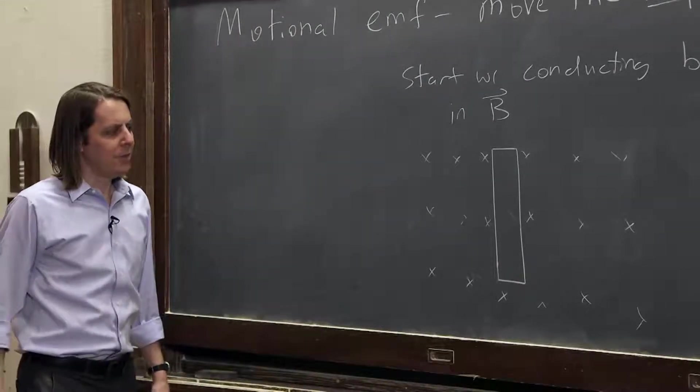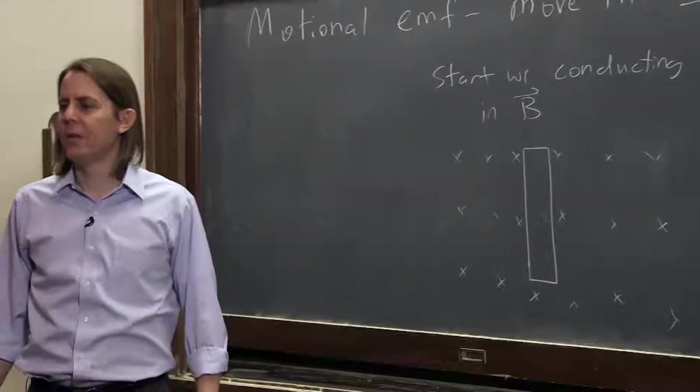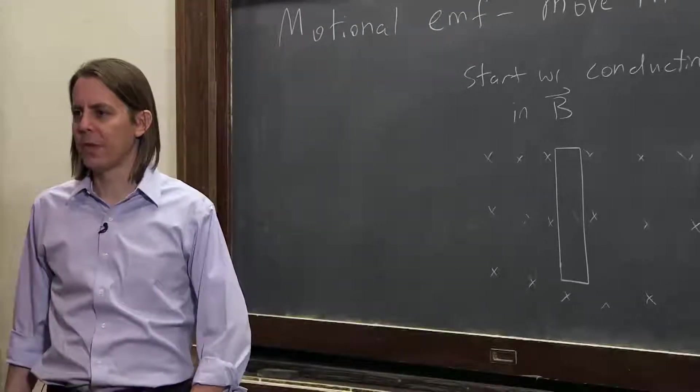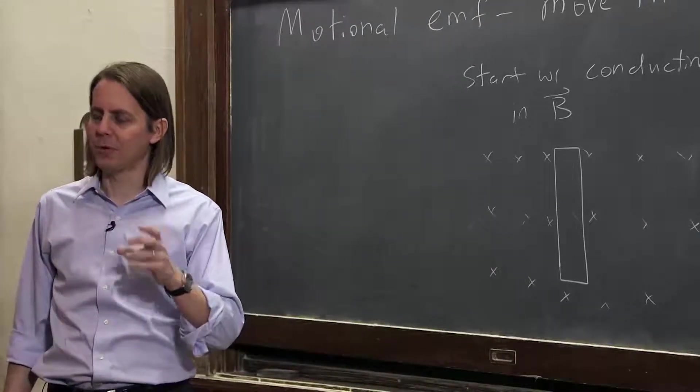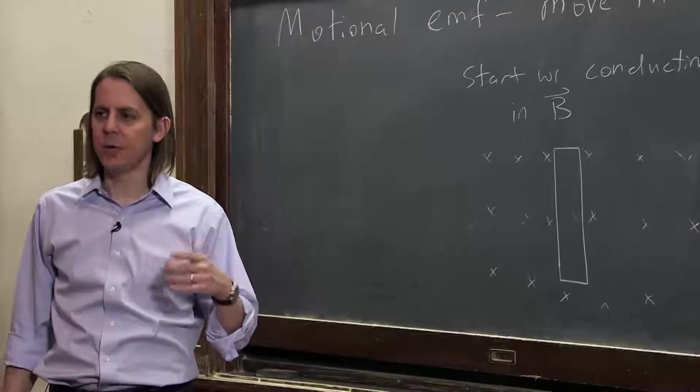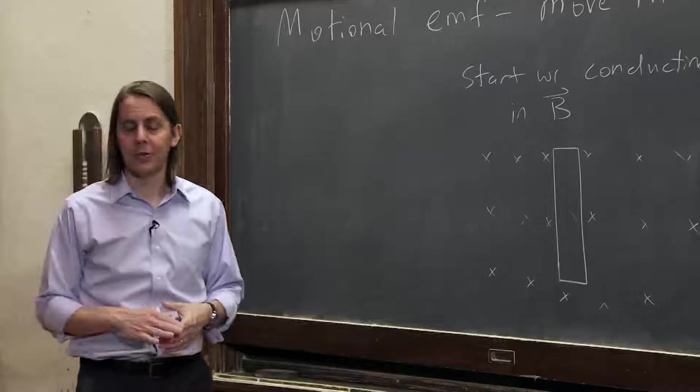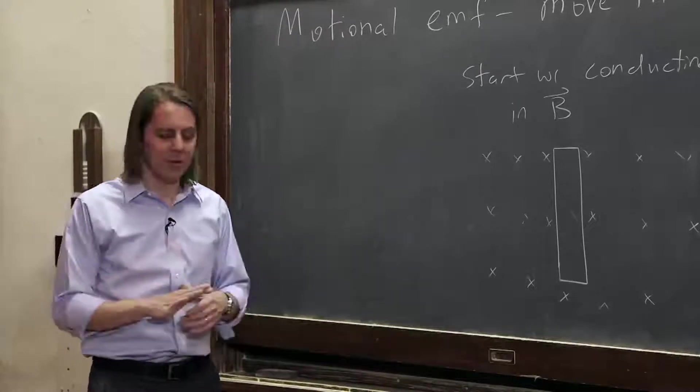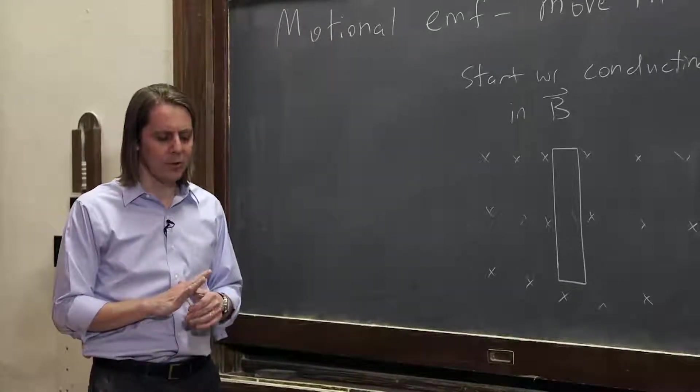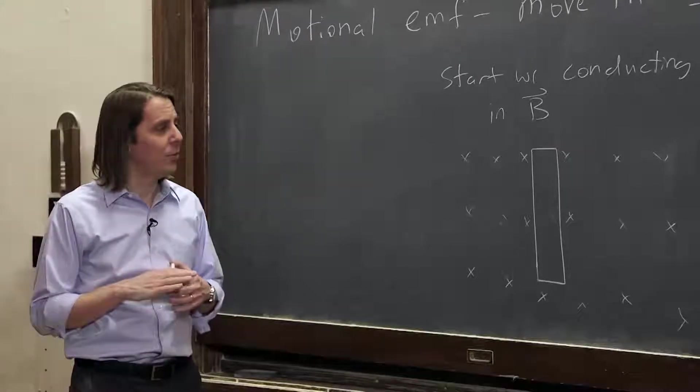So we want to think about, in motional EMF, you still think about what's called the Lorentz force. The QE force, so F equals QE for the electric field, F equals QV cross B for the magnetic field. So you add those together, that's the total force the charge will feel in any combination of electric and magnetic fields. It's called the Lorentz force. And we have to think about what that will be.